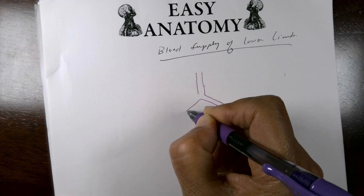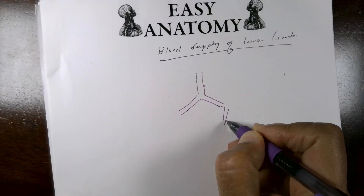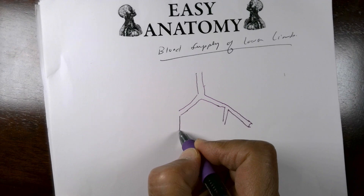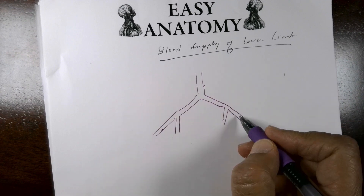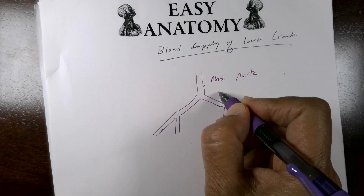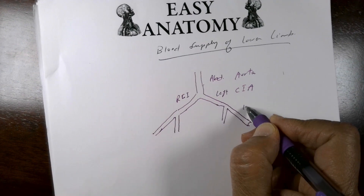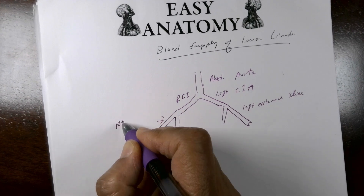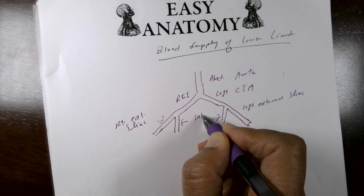Here is the abdominal aorta, where it splits into two common iliac arteries. Each common iliac artery then splits into internal and external iliac arteries. The external iliac artery appears to be the continuation of the common iliac. Here are the left and right common iliac arteries, the left and right external iliac arteries, and these two are the internal iliac arteries.